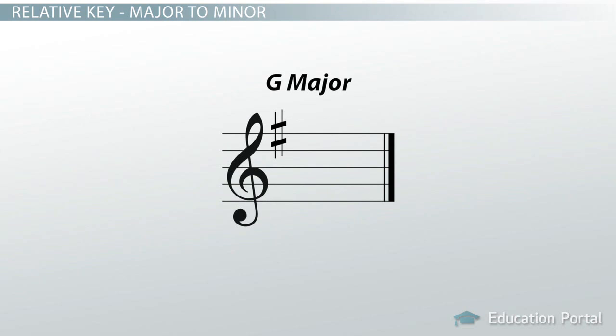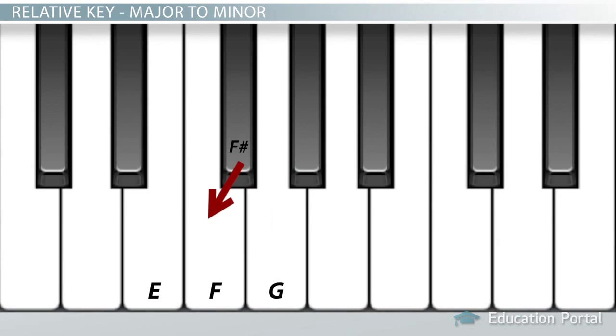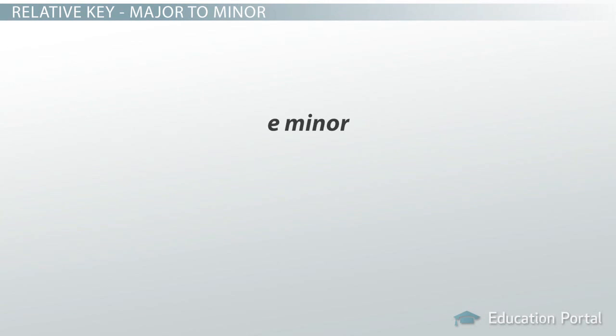We know that a key signature with one sharp is G major. When counting backwards three half steps, we find that the relative minor is E minor.